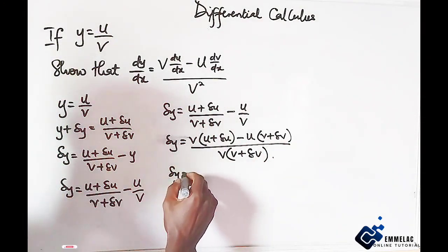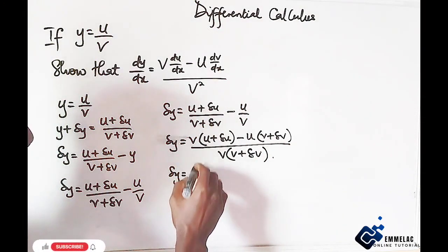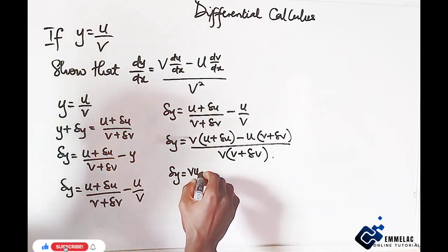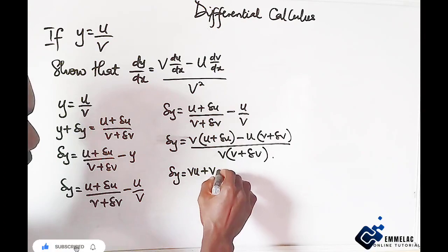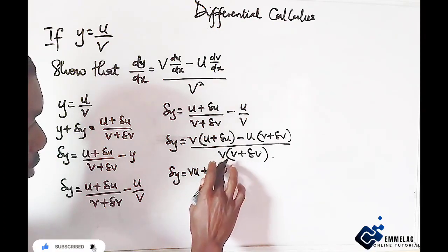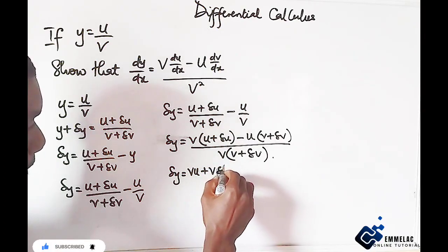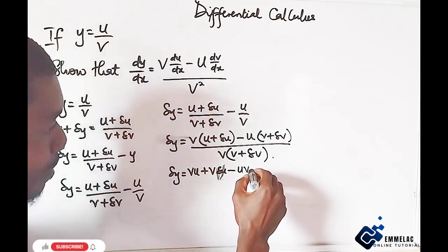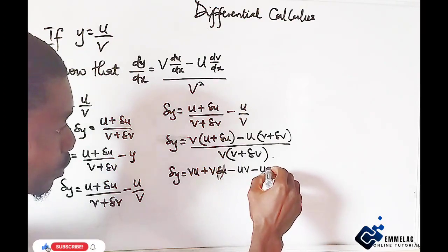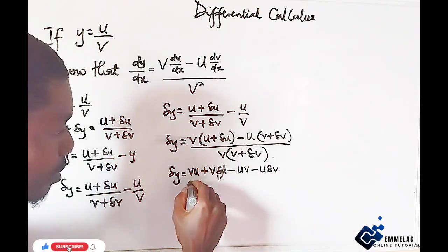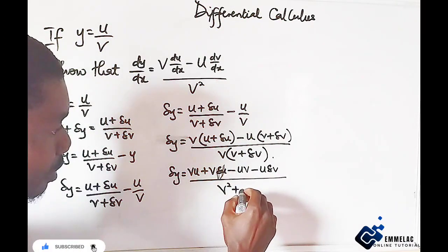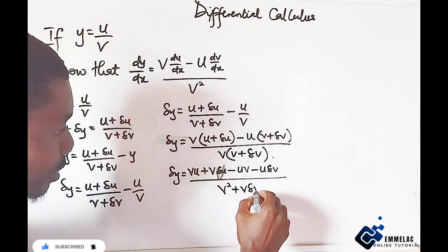So here you have change in y equals vu plus v change in u then minus u then minus u change in v all over v squared plus v change in v.